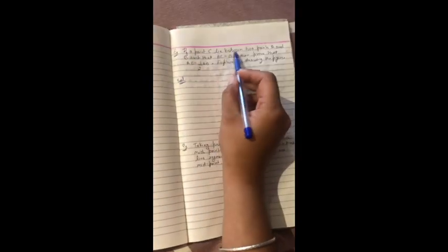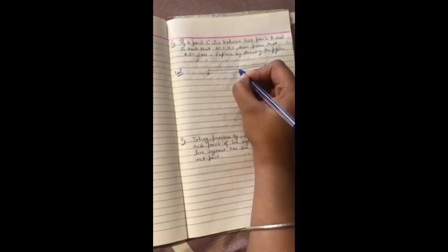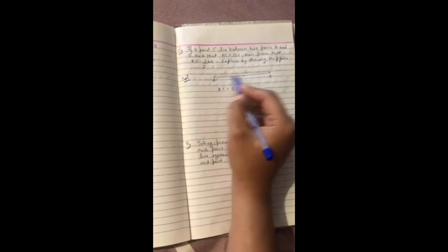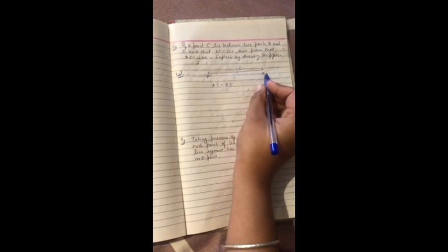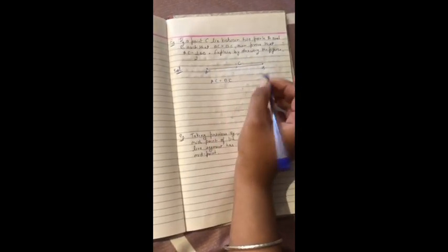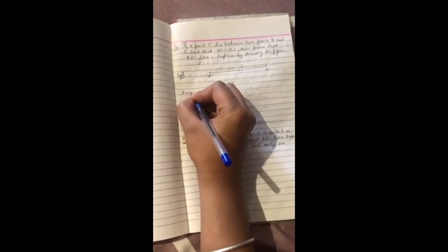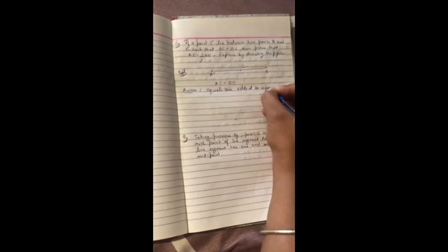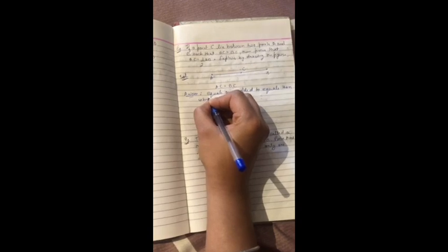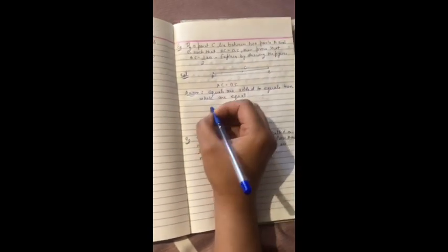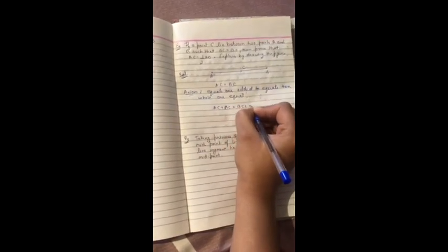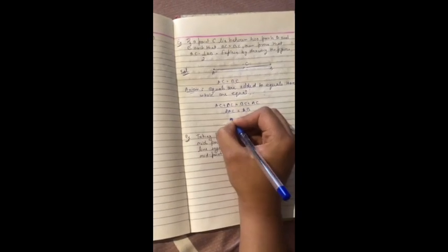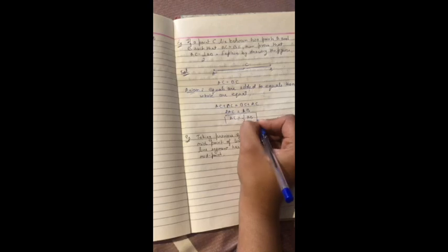Next: if a point C lies between points A and B on line AB, and AC equals BC, then prove that AC is half of AB. We are given that AC and BC are equal. If I add AC to both sides, using the axiom we studied, BC plus AC becomes AB. AC plus AC equals AB, so 2AC equals AB. Therefore AC equals half of AB. Hence proved.